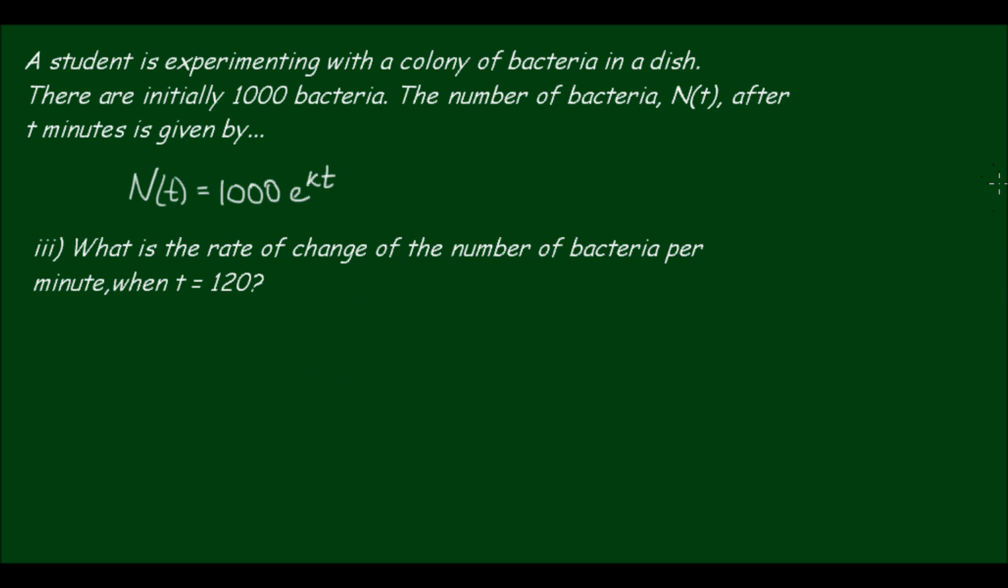Okay, so moving on to the third part of the question. What is the rate of change of the number of bacteria per minute when t equals 120? Now to find the rate of change of the number of bacteria, we have to differentiate this equation with respect to t. So let's do that. dn dt is equal to 1000. So the constant remains.